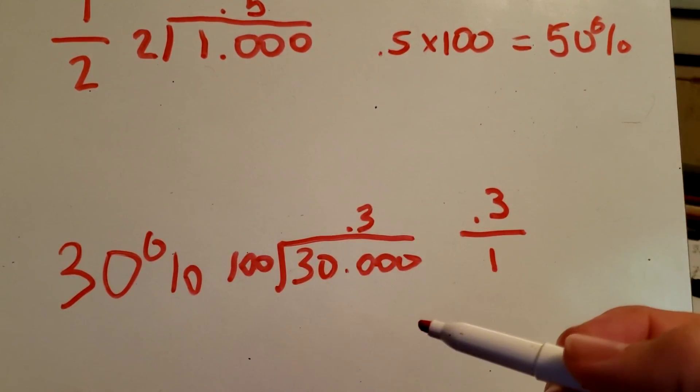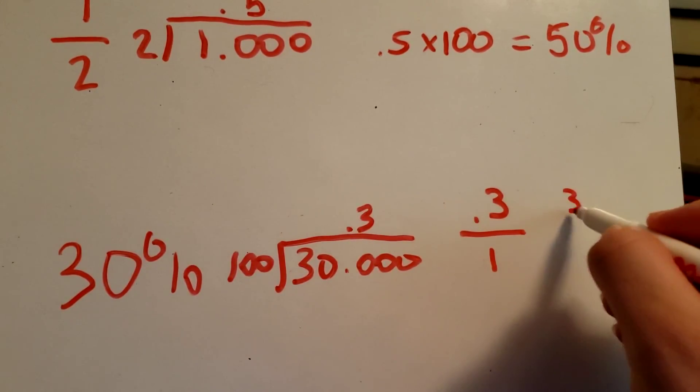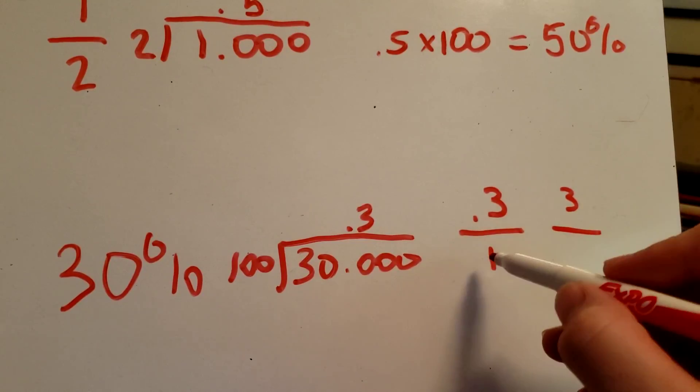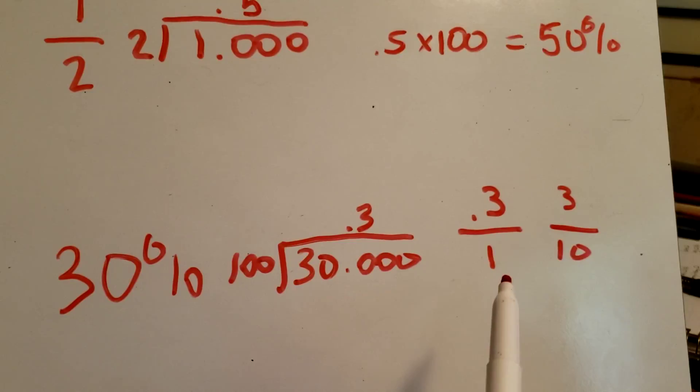0.3 over 1 - well, you can imagine if you multiplied 0.3 times 10, you would get 3, and if you multiplied 1 times 10, you'd get 10, and you'd end up with 3 tenths.